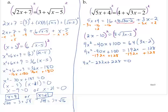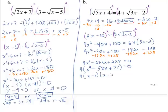There's a common factor of 4, so factoring that out gives 4 times x squared minus 58x plus 57 equals 0. That trinomial factors as x minus 1 times x minus 57. Since 4 cannot equal 0, the possible solutions are x equals 1 or x equals 57.